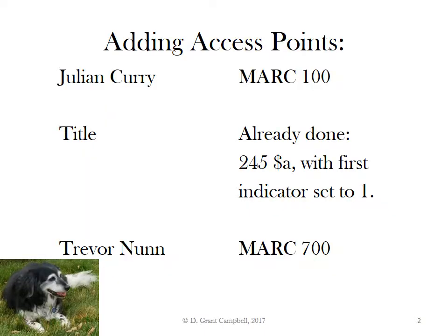We have three access points. We have Julian Curry, who is the creator in the MARC 100 field. We have the title, and that is already done because the title appears in the 245 subfield A, and the first indicator of 245 has been set to 1, so there's nothing more we need to do. There will automatically be a title added entry, and then we have to add an access point for Trevor Nunn using the MARC 700 field.